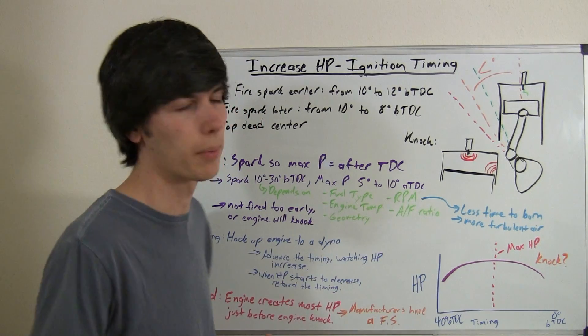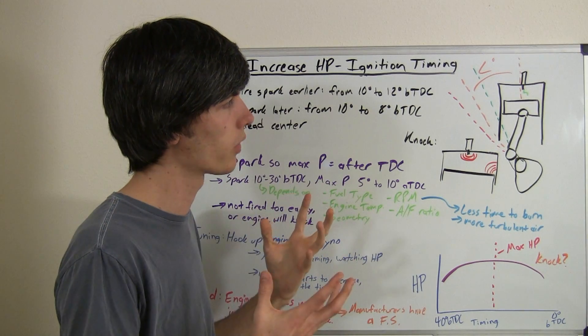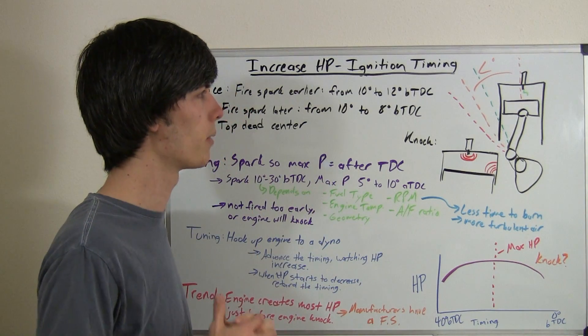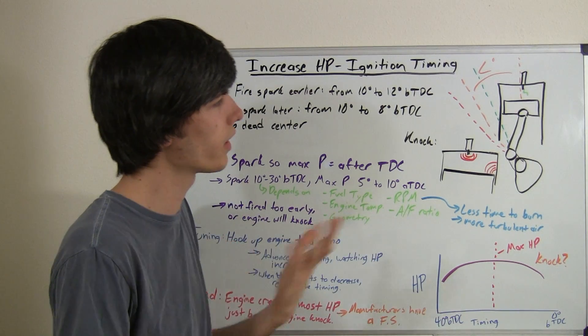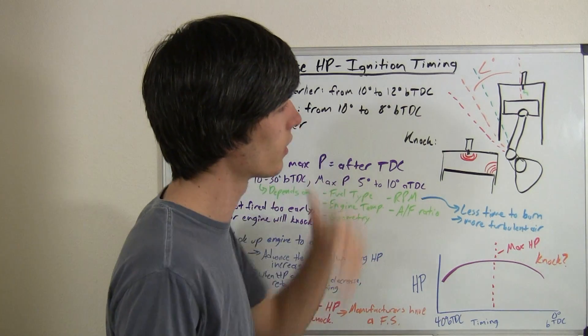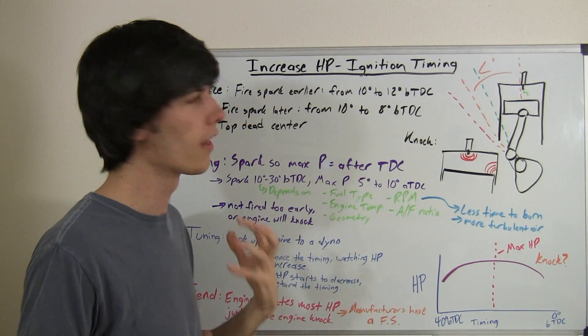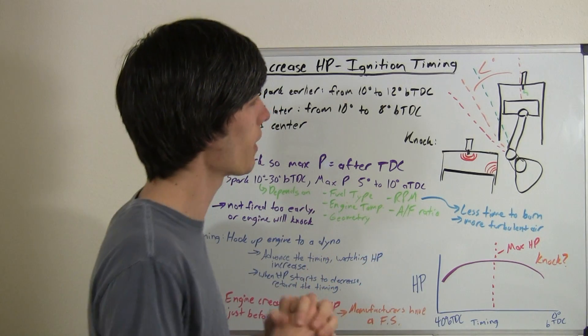So think about this: RPM. If you're at a very high RPM, you don't have a lot of time for that flame to expand. So you're thinking, okay, well then maybe you have to advance the timing more so that it has more time to expand. Well, it's kind of not even correct in that sense, because as that piston is moving so much faster up and down, the air is going to be so much more turbulent and that will allow the flame to travel quicker.